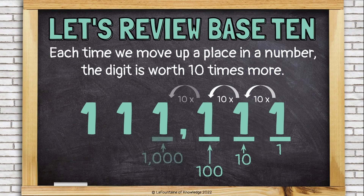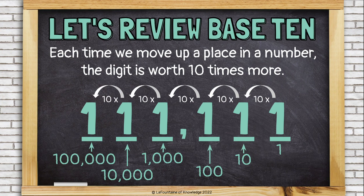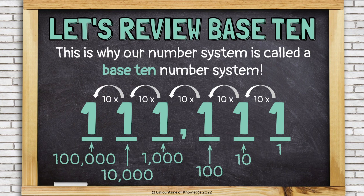If we move over into the thousands place, it's worth 1,000, which is 10 times 100. In the ten thousands place, the one is worth 10,000, which is 10 times more than 1,000. And if we move over again to the left into the hundred thousands place, the one is worth 100,000, which is 10 times more than 10,000. This is why our number system is called a base 10 number system.